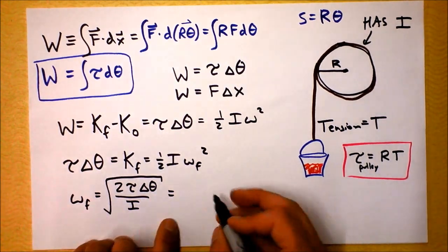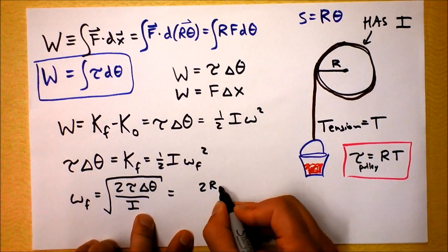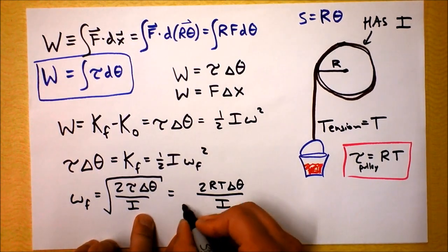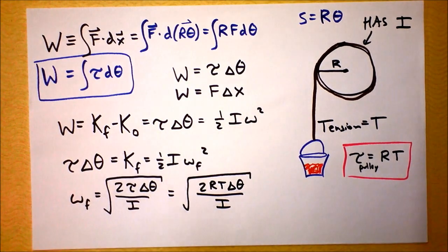But torque is simply equal to R times T, so we're gonna get two times R times T times delta theta divided by I, all square rooted. Wow. What if we solve it?